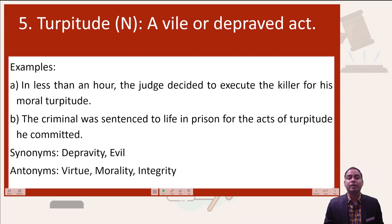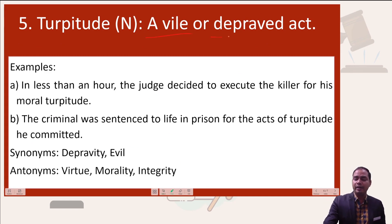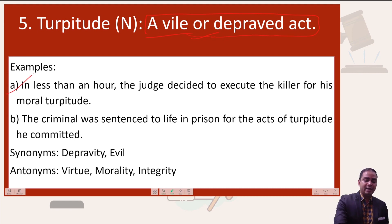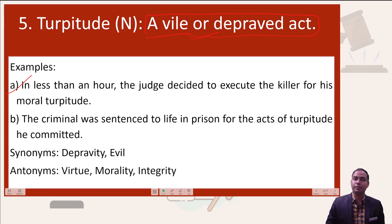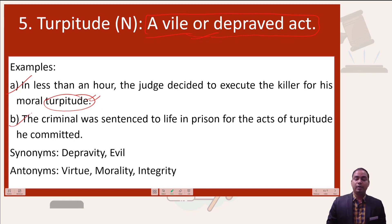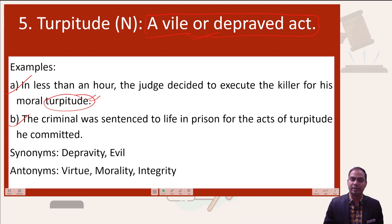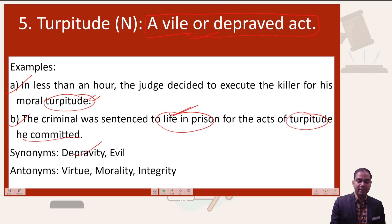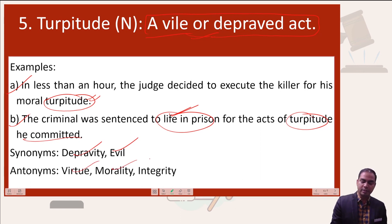The last word in the list is turpitude — a wicked or depraved action, an extremely vile and seriously immoral act. For example: in less than an hour, the judge decided to execute the killer for his moral turpitude — whatever he did was extremely wrong. Another example: the criminal was sentenced to life in prison for the act of turpitude he committed. Synonyms are depravity and evil; antonyms are virtue, morality, and integrity.